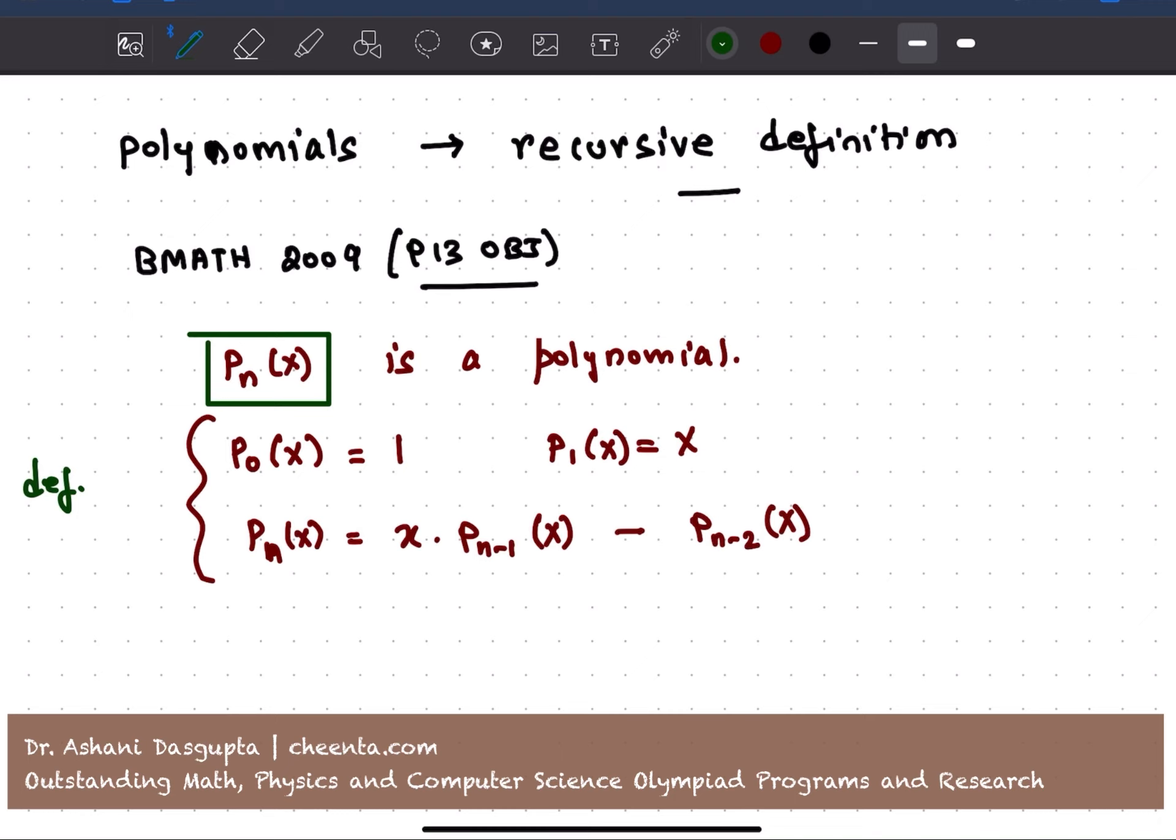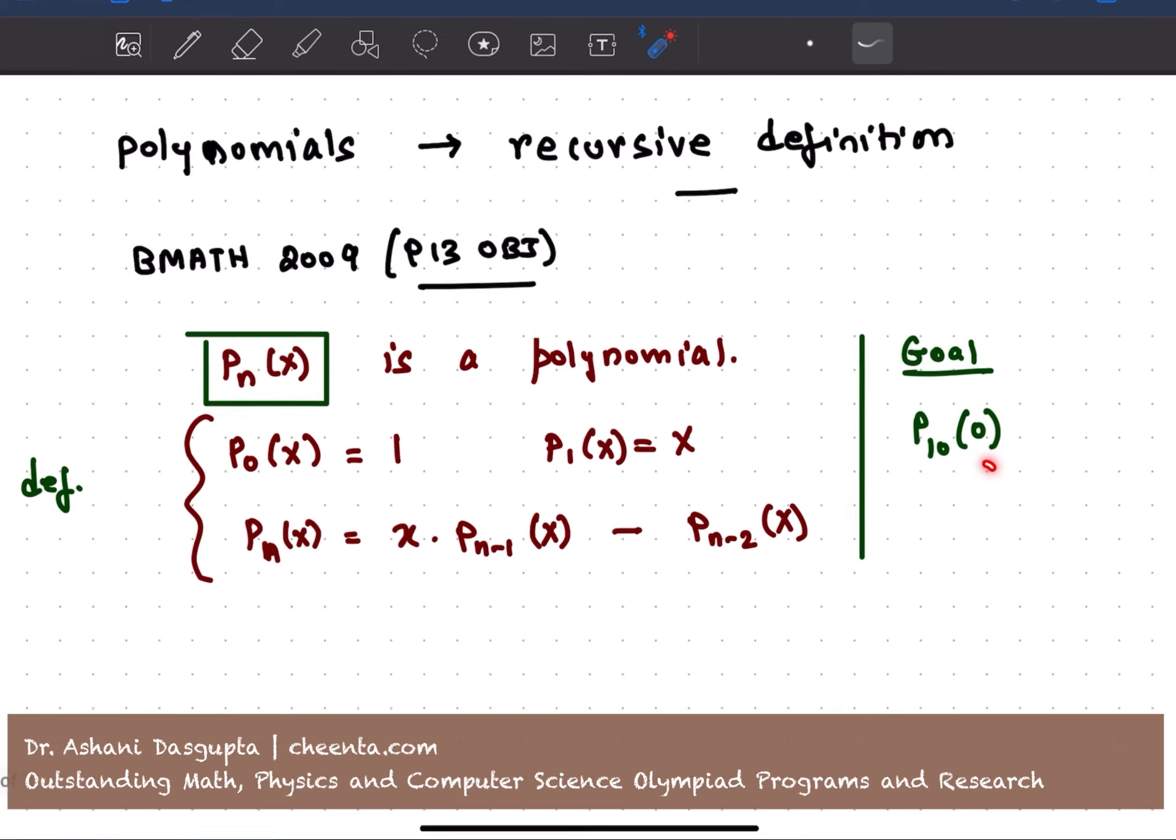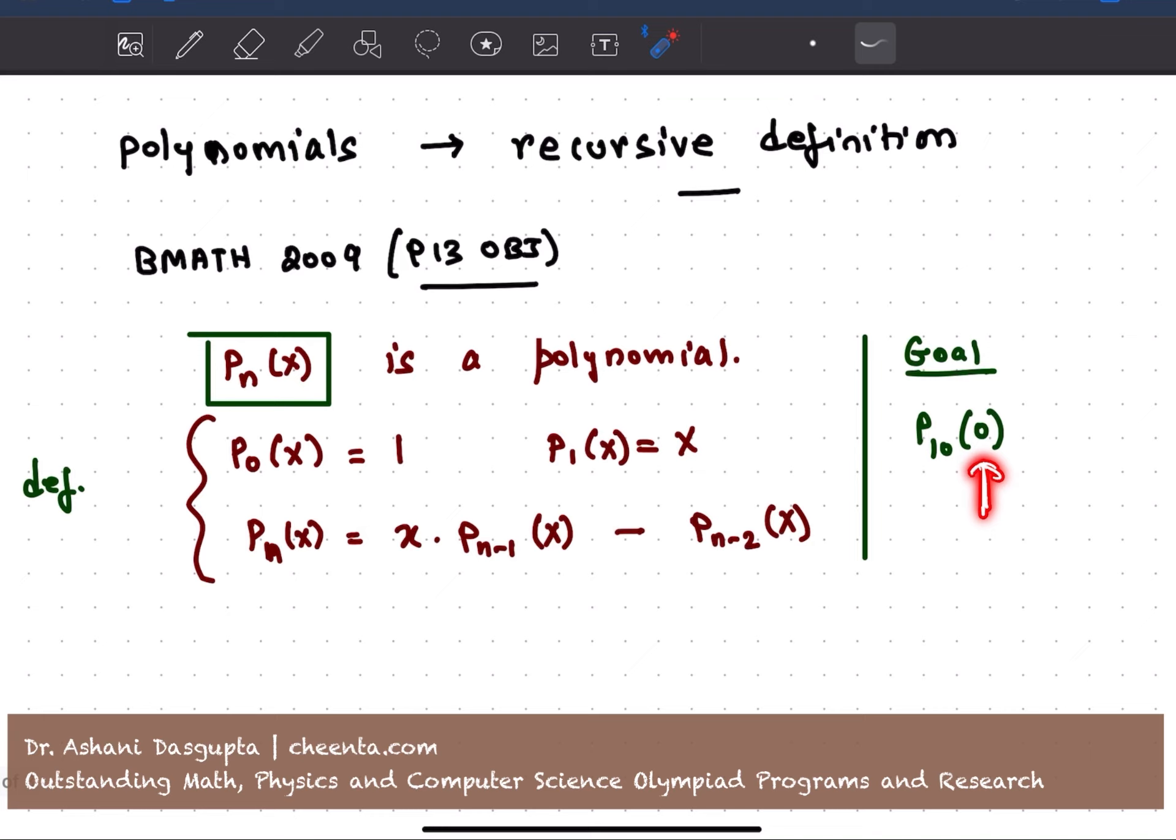Now, our goal is to find out P_10(0). So the 10th polynomial in this sequence, we want to find out what happens if we plug in 0 in that.